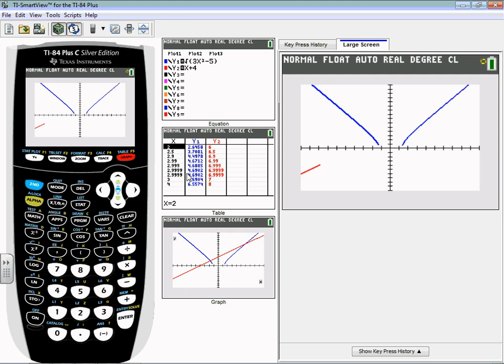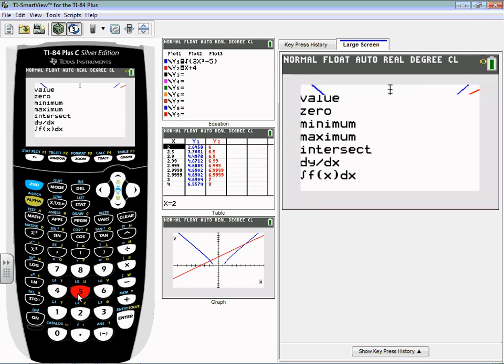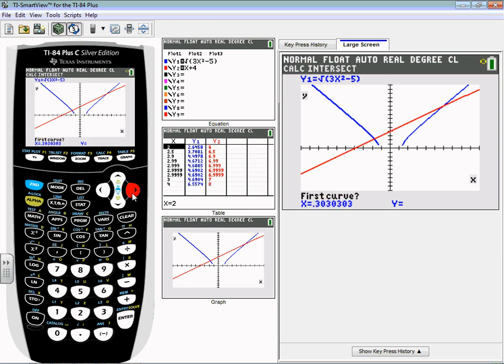In order to find those two solutions, what we're going to do is use our intersect ability—that's second trace intersect. For intersect, what I do is I put my cursor on the intersection I'm looking to find and then I hit enter three times. Important things to notice is that your calculator will automatically switch the curve that it's on. Right now I'm on the blue curve, when I hit enter it switches to the red curve, and then the guess should be near the intersection you're finding.